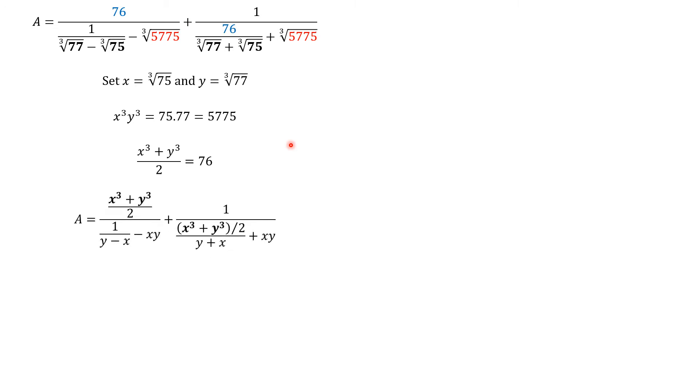With this information, we replace in A. As you see, 76 is replaced here by X cube plus Y cube divided by 2 at both places, and replace Y here, and X here, and here. Again, cubic root of 5775 should be the product or the multiplication of X and Y. That's what we have here.